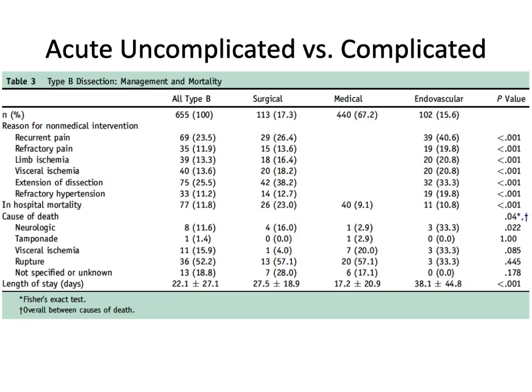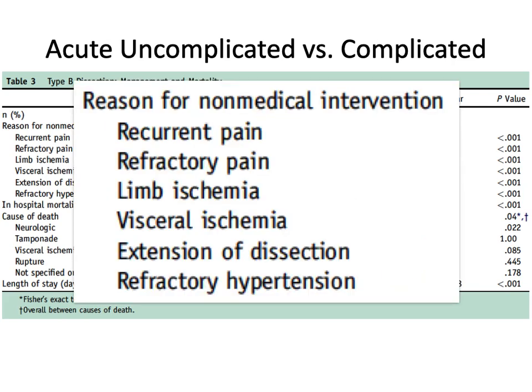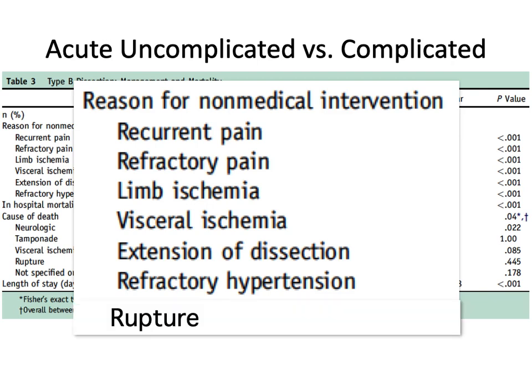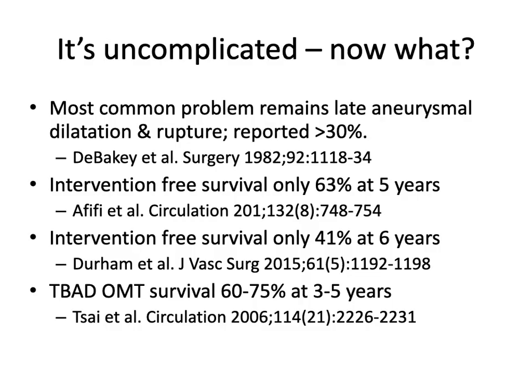The definition of acute uncomplicated versus complicated type B dissection comes down to: recurrent or refractory pain, any type of malperfusion (limbs or viscera), extension of dissection, refractory hypertension, and rupture. Overwhelmingly, most type Bs are uncomplicated. That begs the question: once you've gotten the patient through the acute phase with medical treatment, now what? The most common late problem is aneurysmal dilatation and subsequent rupture.